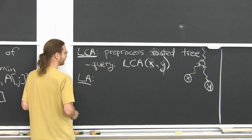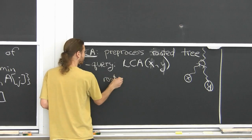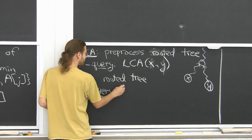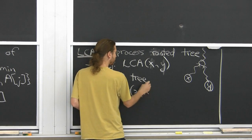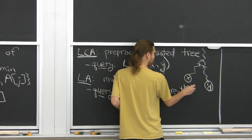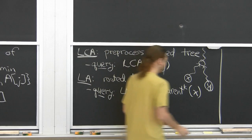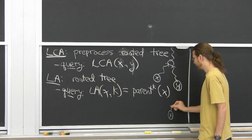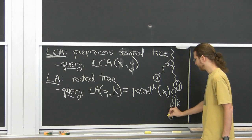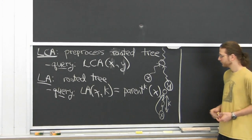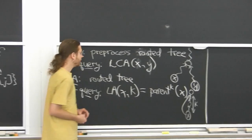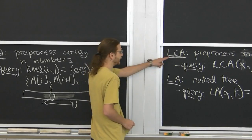Another problem we're going to solve is level ancestor, which again involves preprocessing a rooted tree. The query is different: given a node and a positive integer k, I want to find the k-th ancestor of that node — parent to the k — meaning I jump from node x upward k steps. Obviously k cannot be larger than the depth of the node. So these are the three problems: RMQ, LCA, and LA.